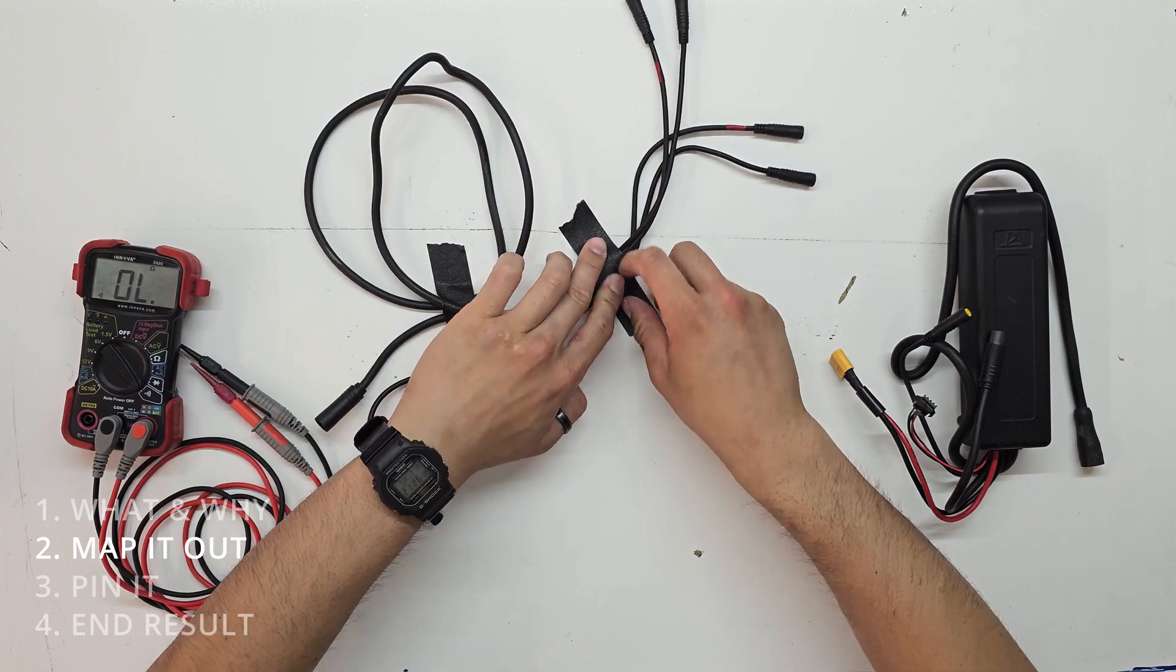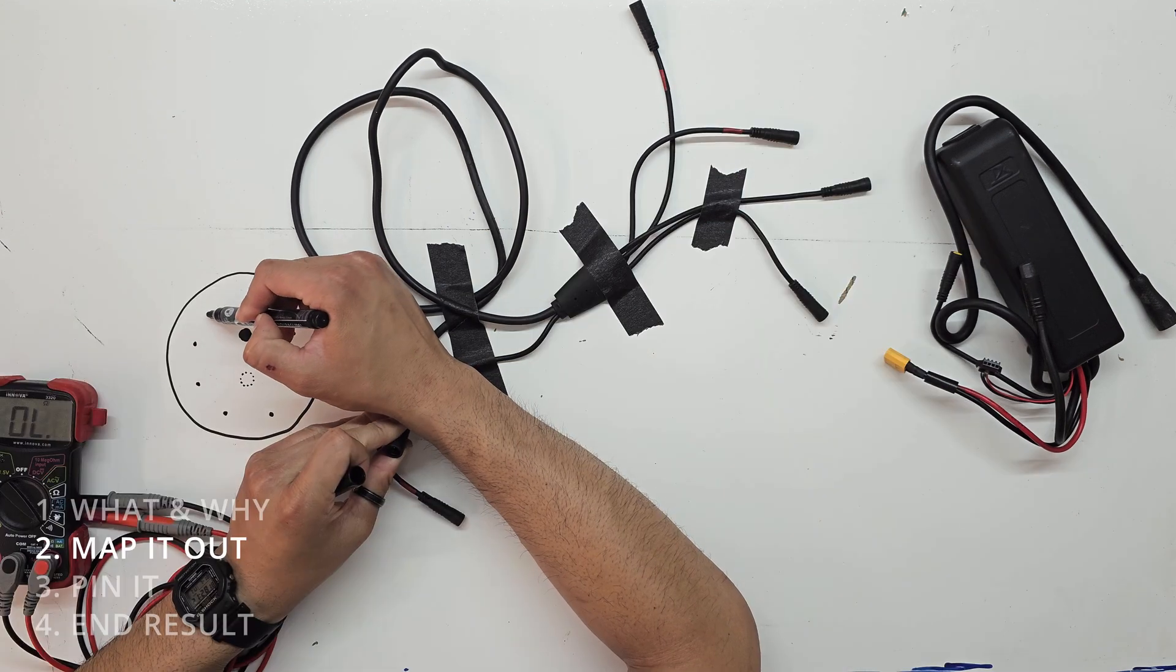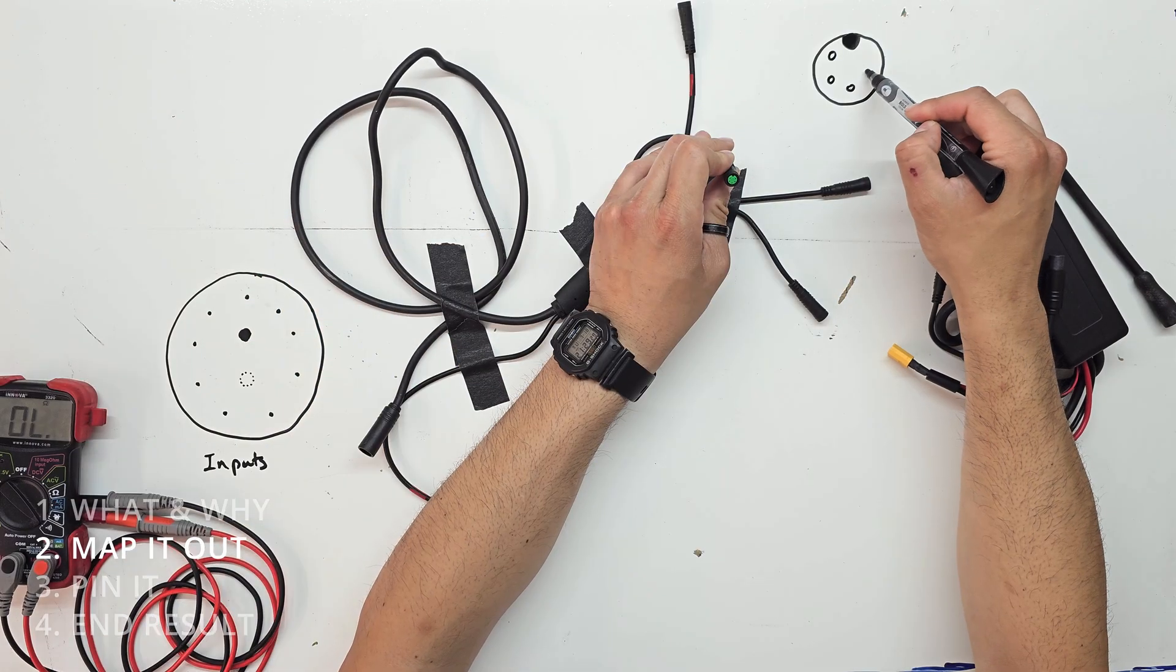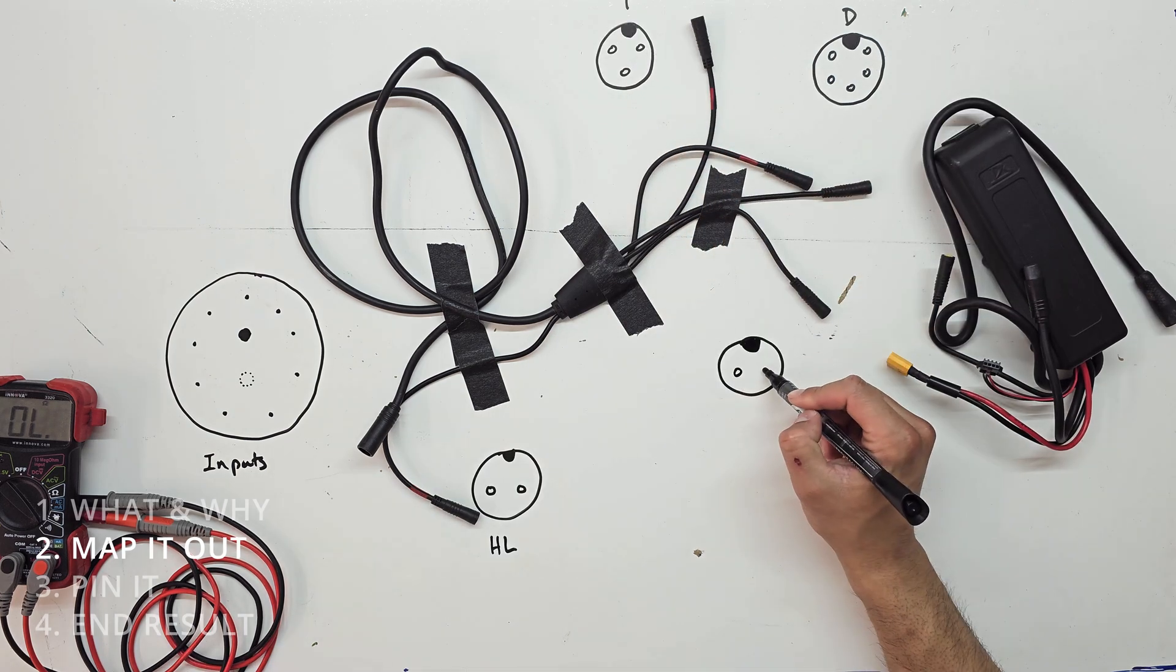The wire harness is taped down so that it's easy to manipulate without moving around too much. And the layouts of each pin and each connector is drawn out and labeled. This is an investment in organization so that later it's easy to refer back to all the work we just did.